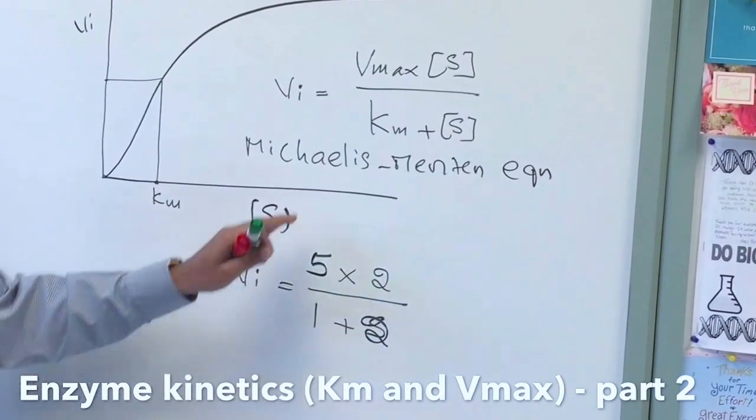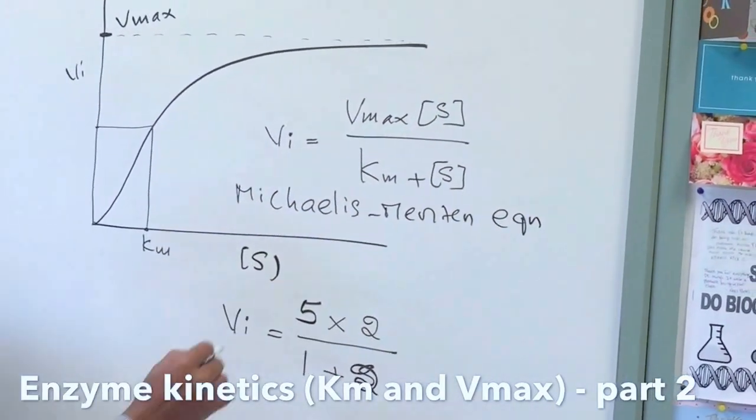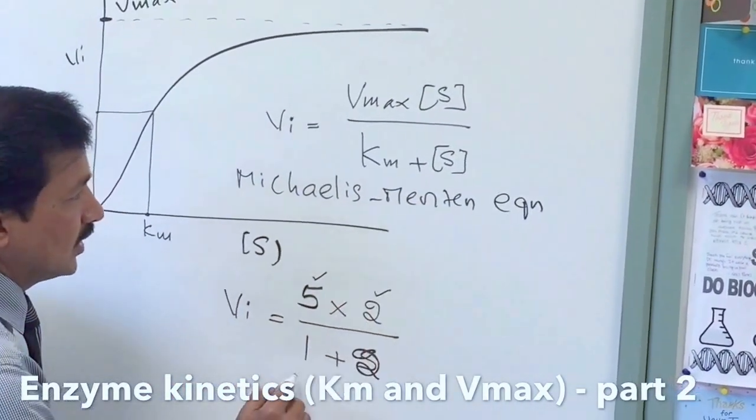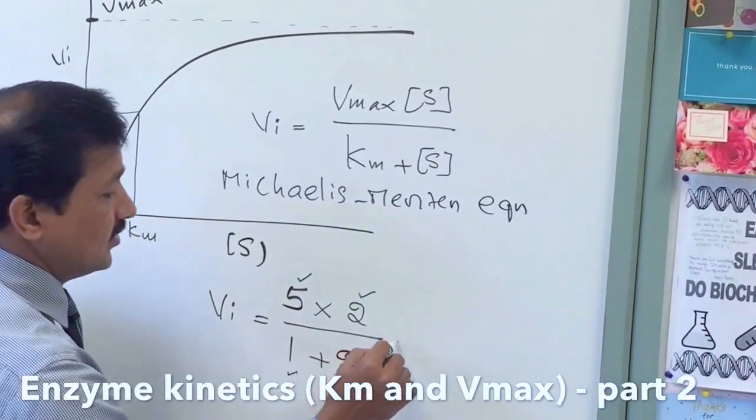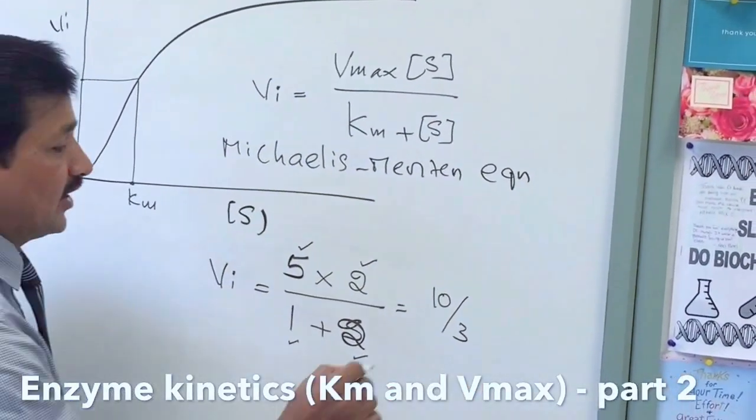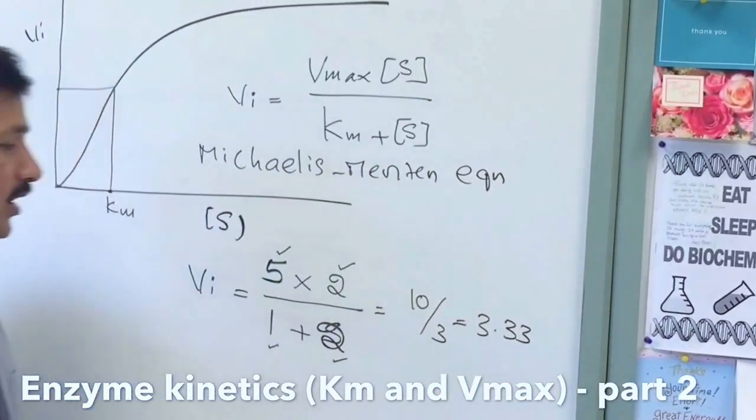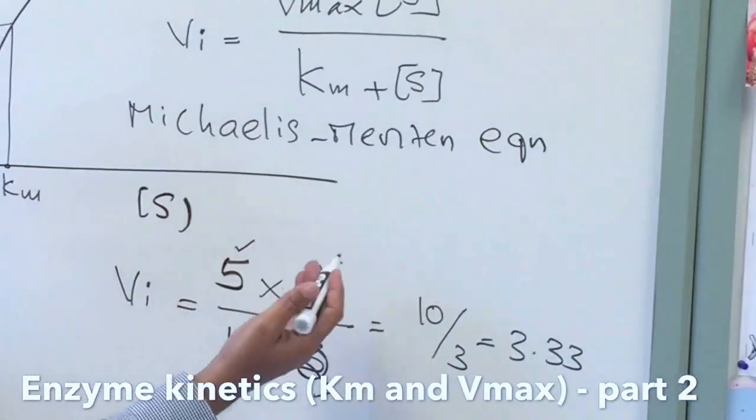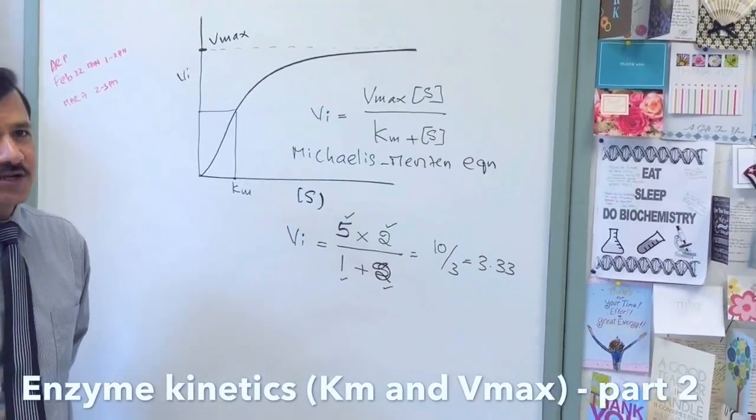So using Michaelis-Menten equation, initial velocity equals maximum velocity multiplied with substrate concentration over Km plus substrate concentration. Velocity is 5, the substrate concentration is 2. Now if you simplify this you get 10 over 3, you will get 3.33, and this will be the velocity of the reaction in moles per second, whatever the concentration of this substrate.